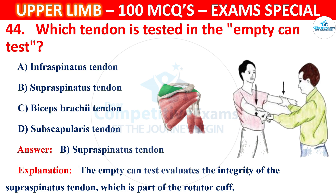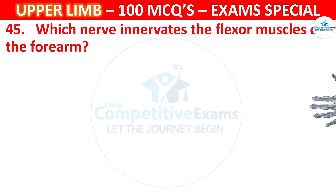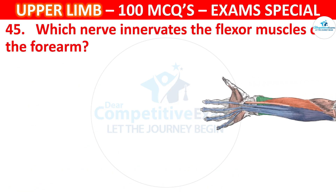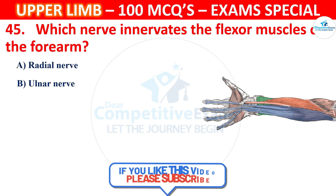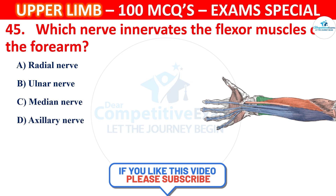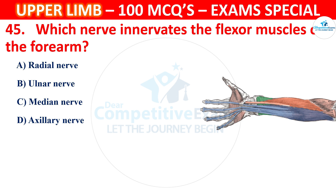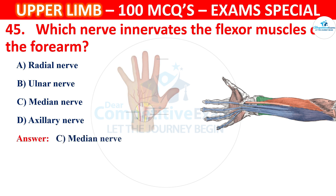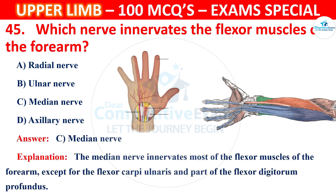Question number 45: Which nerve innervates the flexor muscles of the forearm, except for the flexor carpi ulnaris and part of the flexor digitorum profundus? The correct answer is C, median nerve. The median nerve innervates most of the flexor muscles of the forearm except for the flexor carpi ulnaris and part of the flexor digitorum profundus.